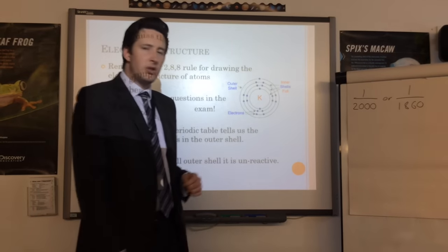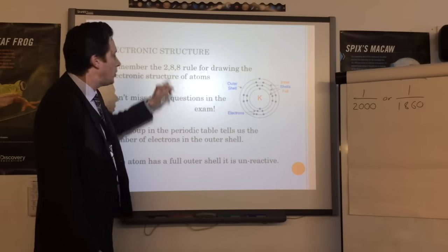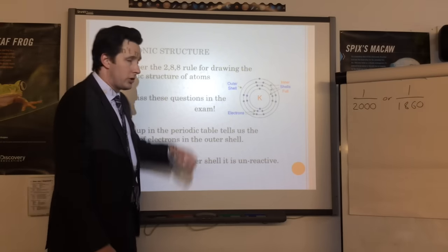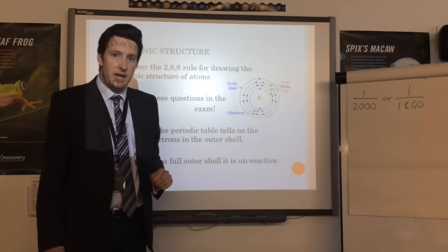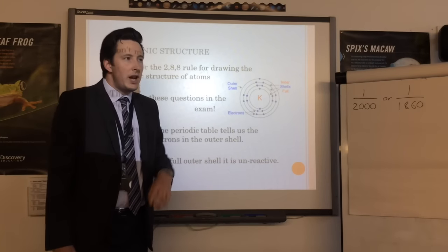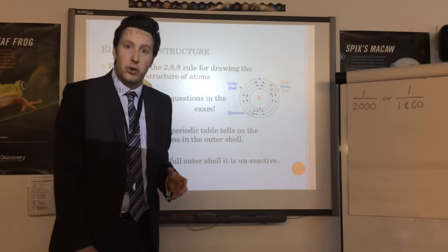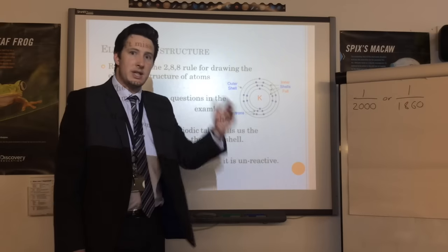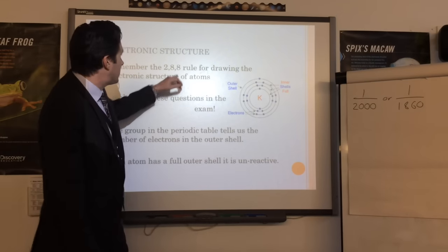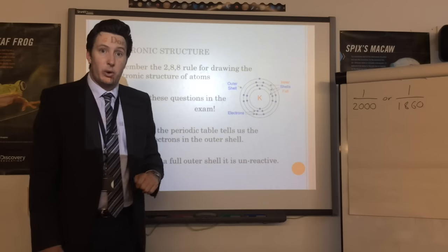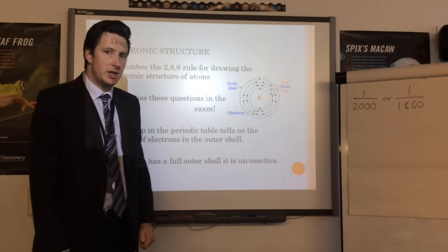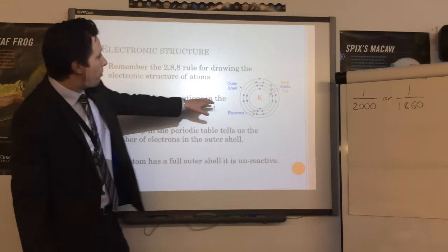The 2-8-8 rule means two electrons go into the first shell, eight electrons can go into the second shell, and eight electrons can go into the third shell. If there are any electrons left over after that, you just add them into the next shell. It will only go up to calcium, which has two in its fourth shell, and it stops there - that's all we need for GCSE.